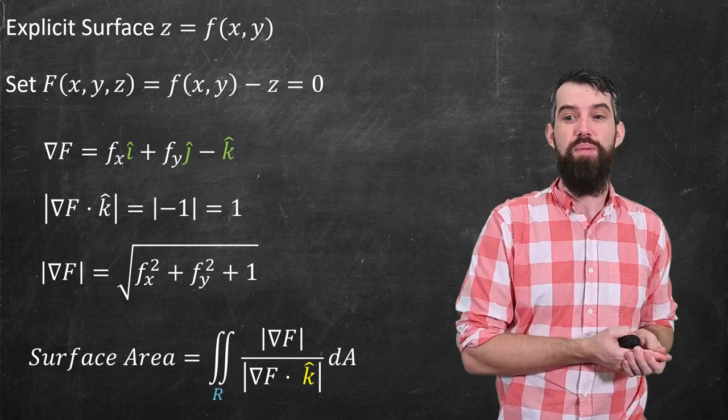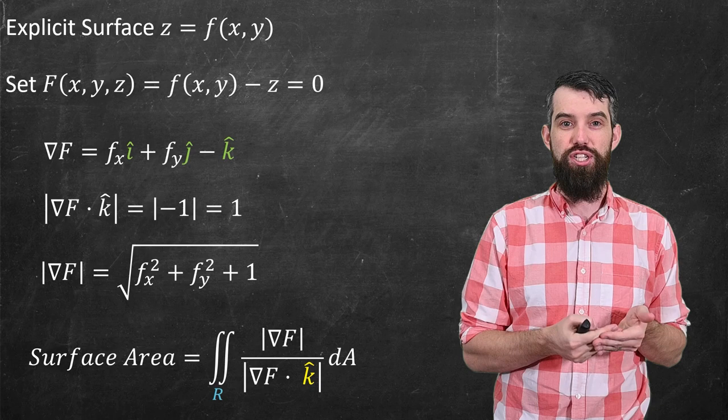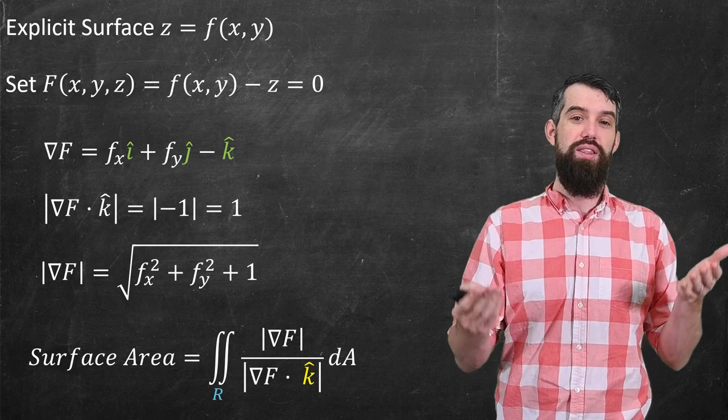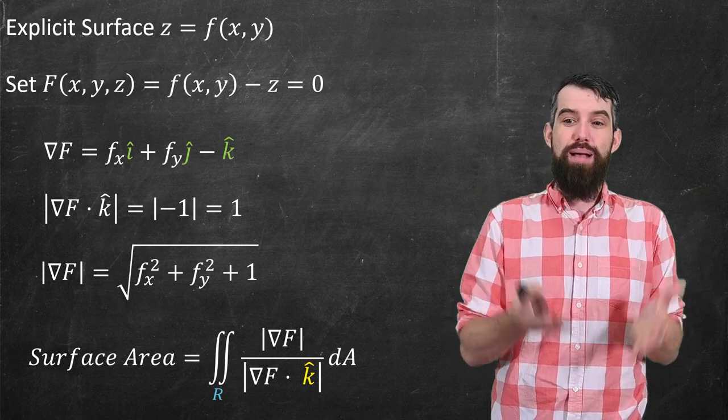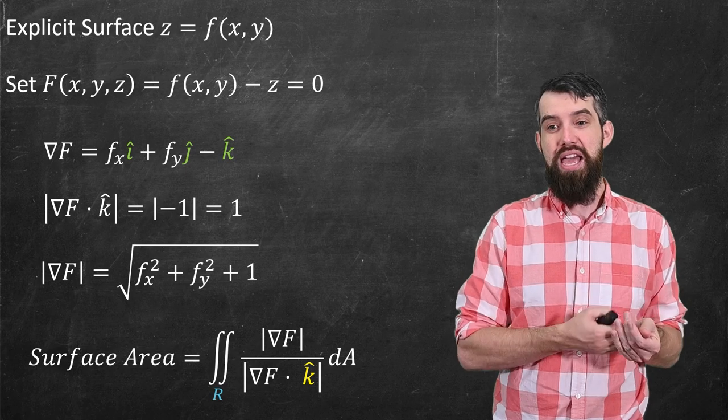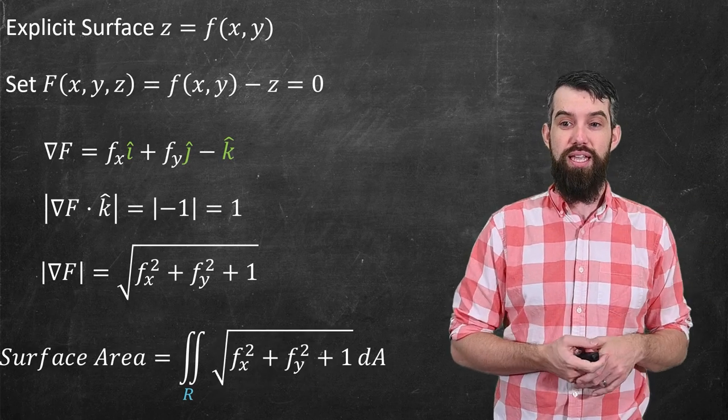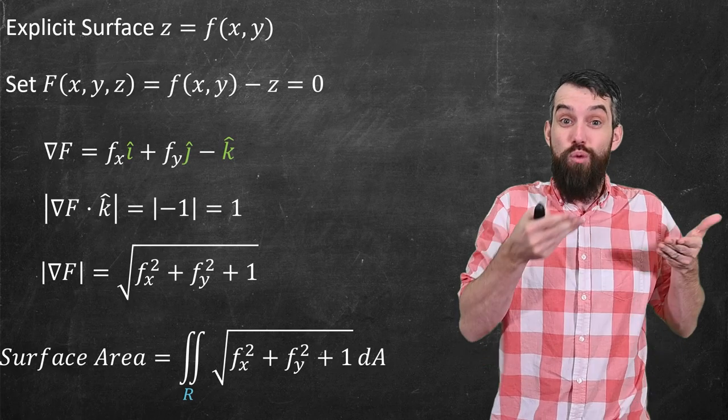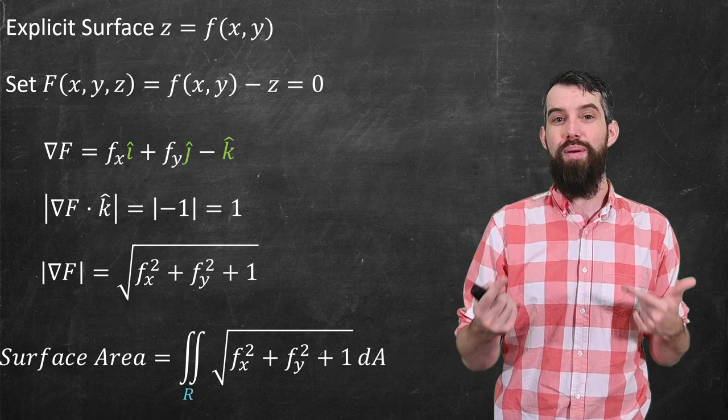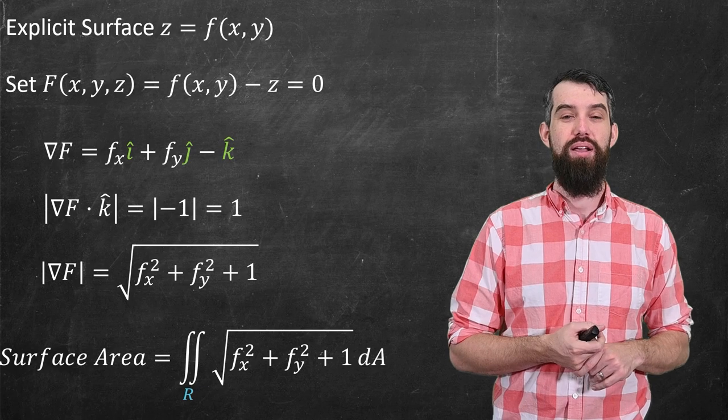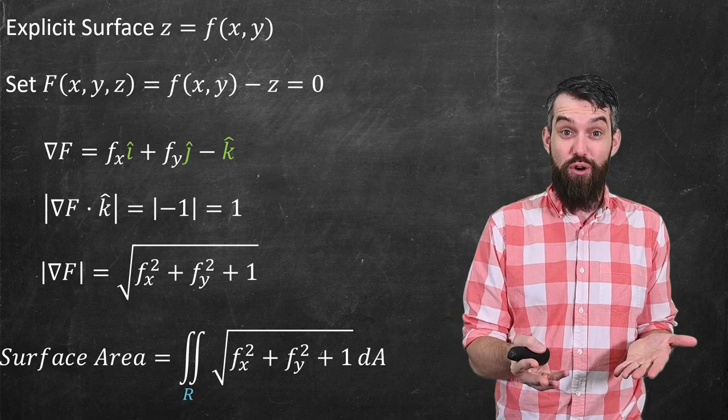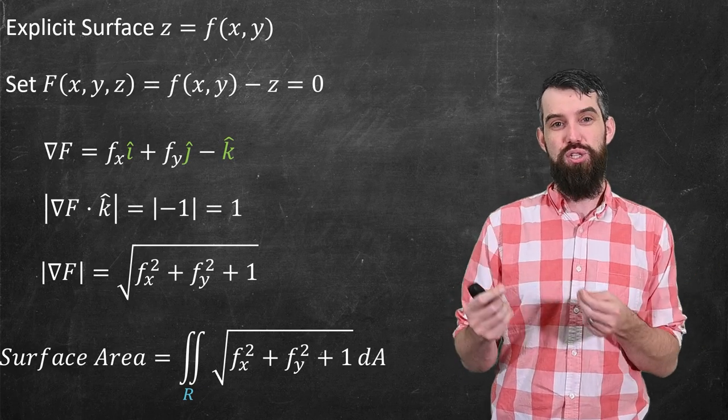So our formula that we just were talking about is the double integral over the region of this fraction, the length of gradient of F over the absolute value of gradient of F dotted with k hat. And so just plugging those two things in, well on the top I get the square root of fx squared plus fy squared plus one. And on the bottom I just get one so I won't even bother writing it down. So this is our surface area formula for an explicitly described surface.